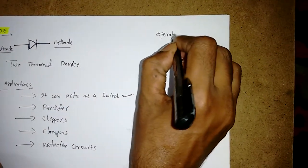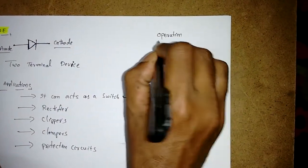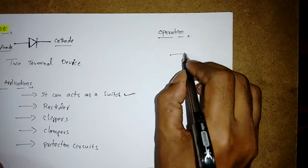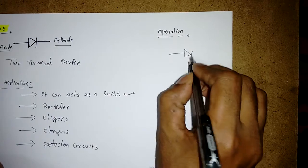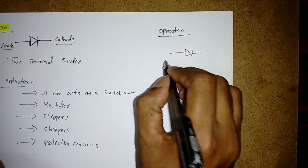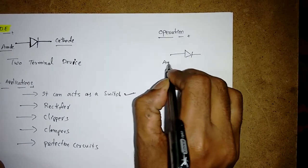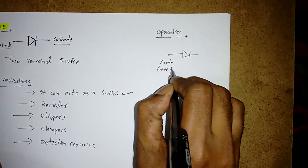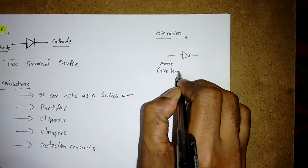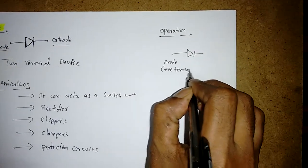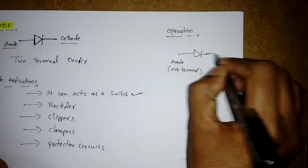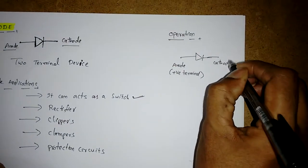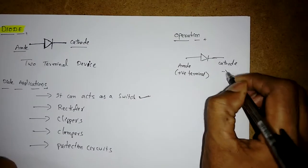Now we will see how the diode operates. We start with the ideal diode. This is the diode symbol. Generally, the anode is the positive terminal, and the cathode is the negative terminal.